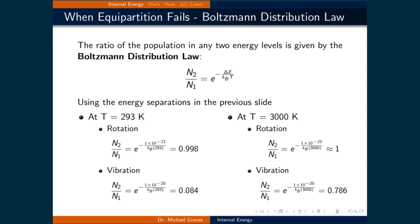The interpretation is that at room temperature, equipartition fails in that energy is only distributed between rotational and translational degrees of freedom — translational is included here because its energy separation is much smaller than rotation's. It is only when we increase the temperature to about 3000 Kelvin that the ratio of vibrational state occupations starts to approach 1. The takeaway is that only at high temperatures do all three types of degrees of freedom matter when calculating internal energy; at room temperature, only translational and rotational degrees of freedom significantly contribute.